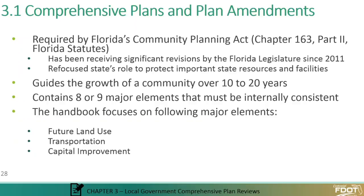In regards to what comprehensive plans do, they give a vision for a local government, usually between 10 to 20 years. Some comprehensive plans can have multiple planning timeframes, depending on various elements within the plan having different planning horizons. For example, sector plans — which we will talk about later in this presentation — usually have different planning time horizons than the actual comprehensive plan they're adopted into, sometimes 50 or even 100 years. These are documents generally trying to understand what the community wants and what the community sees for itself into the future.